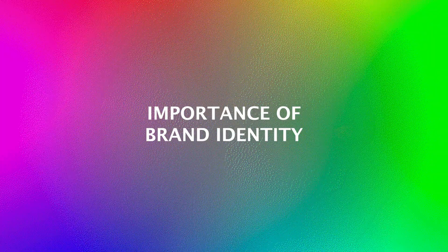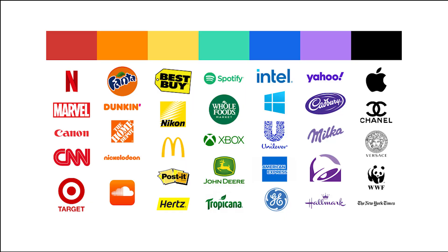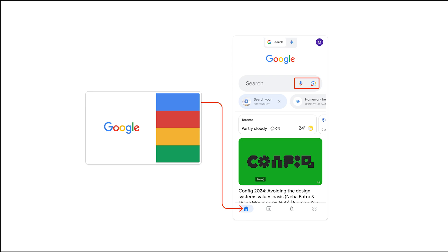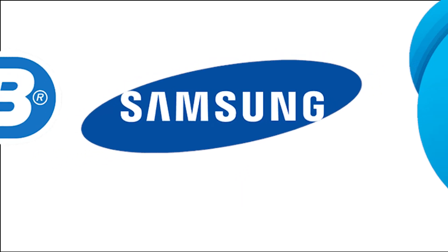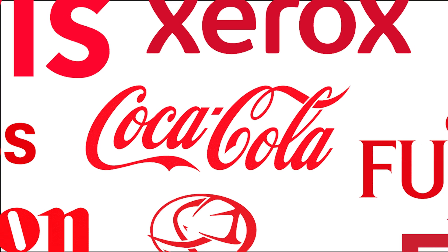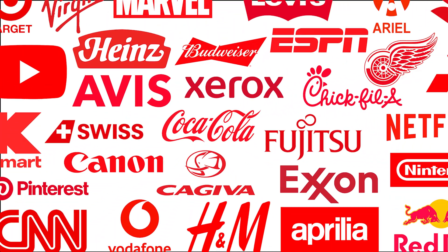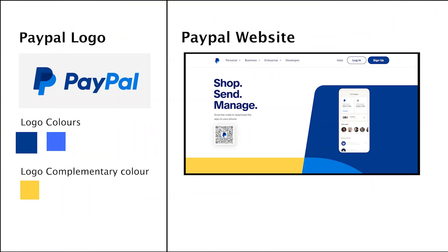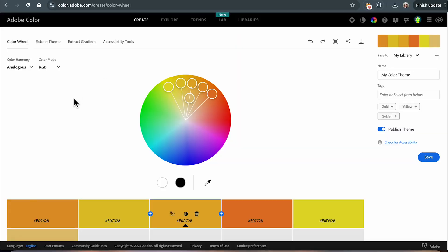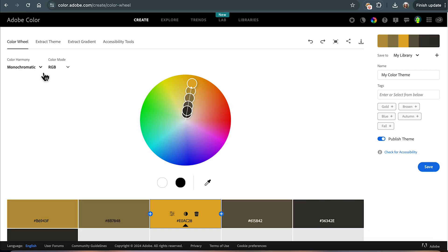Next, consider the brand's identity. The colors you choose should reflect the brand's personality and values. For example, blue often conveys trust and professionalism, while red can evoke excitement and passion. Aligning your color choices with the brand's identity helps in building a cohesive user experience.